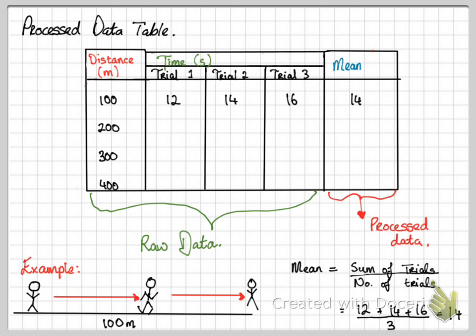A reminder: this processed data should be in a separate table. So you should start off with a raw data table with just the calculations you got from the experiment, then you should show formulas, and then you should have a separate table for processed data.